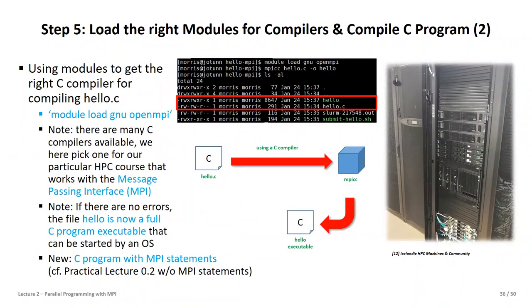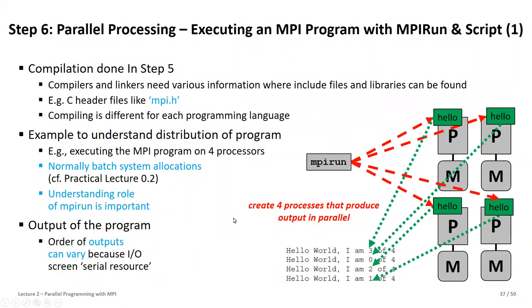The modus operandi of compiling is essentially the same — you ensure OpenMPI is loaded in the libraries, and then compile with: mpicc hello.c -o hello to get the executable. There is not much more happening, except needing access to the MPI libraries.